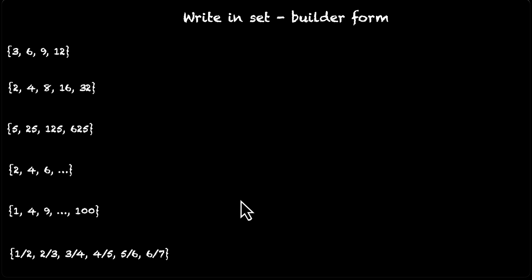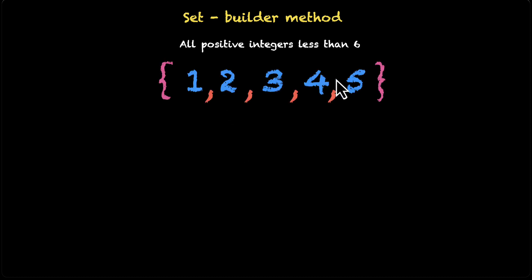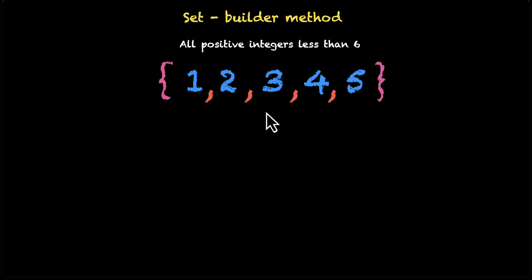So let's do this together. Before we do that, a quick recap. What's the set builder method? Well, this is when you write the question. Suppose you want to write all positive integers less than 6. This is how we write it in the roster form: 1, 2, 3, 4, and 5 within brackets and separated by commas. But the way to write this in the set builder method is to figure out what these elements are doing — what are the rules that they are satisfying?